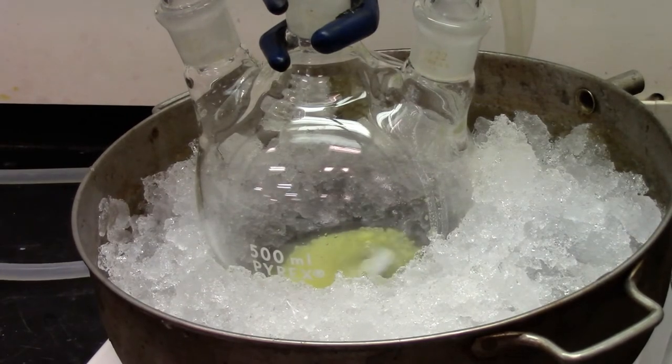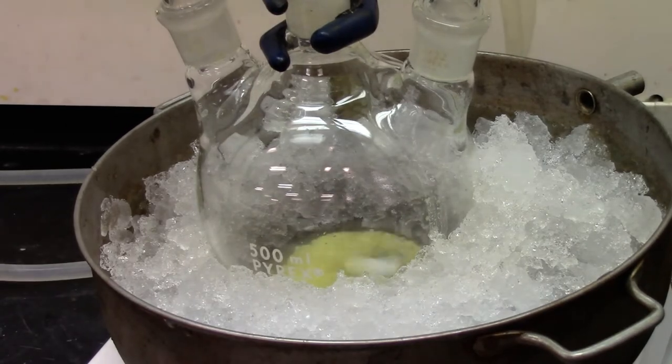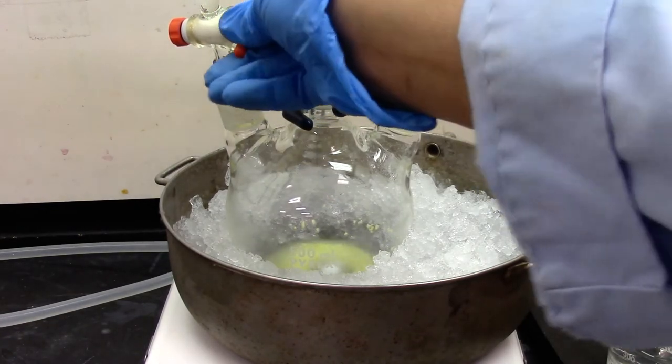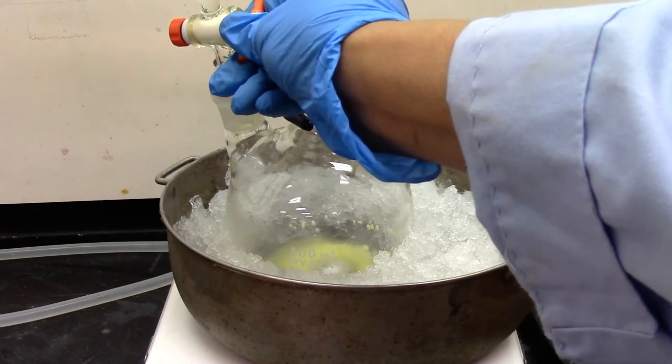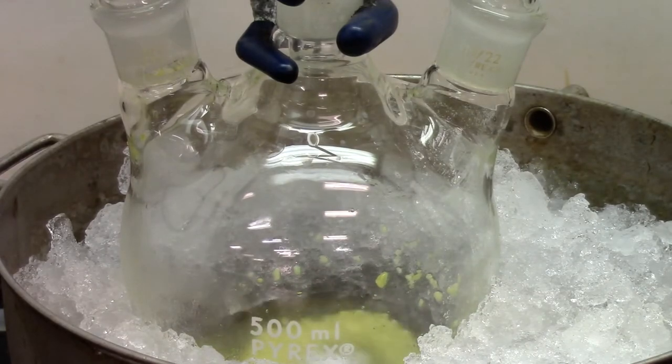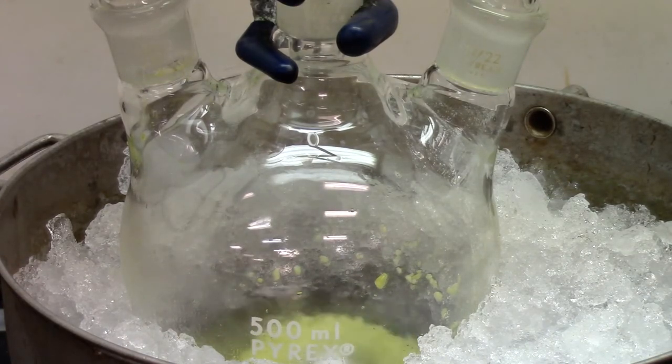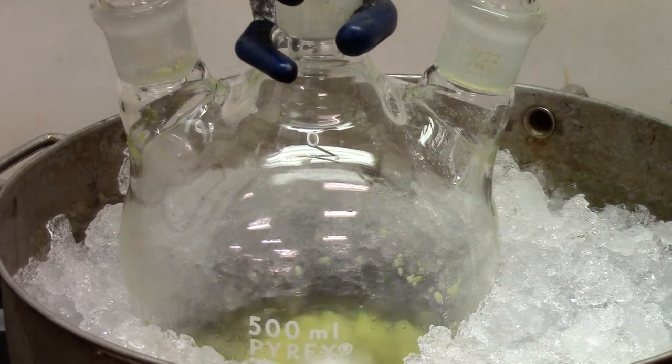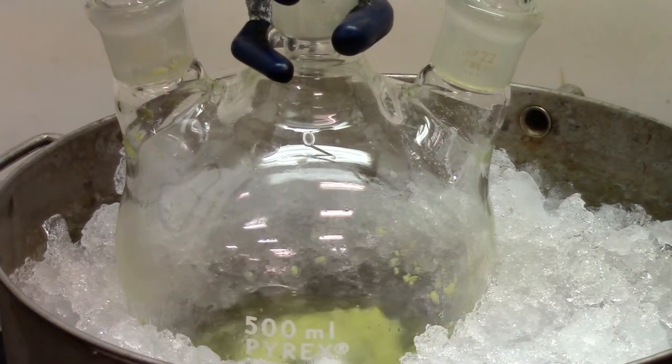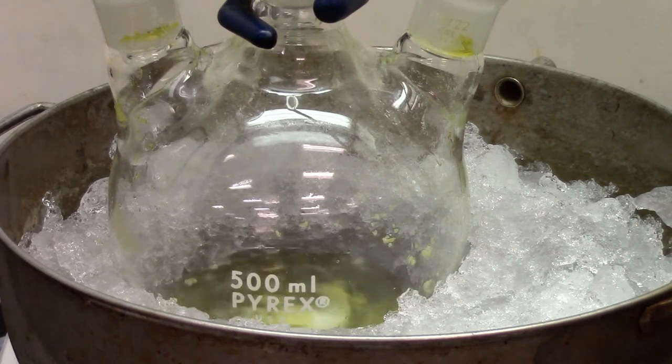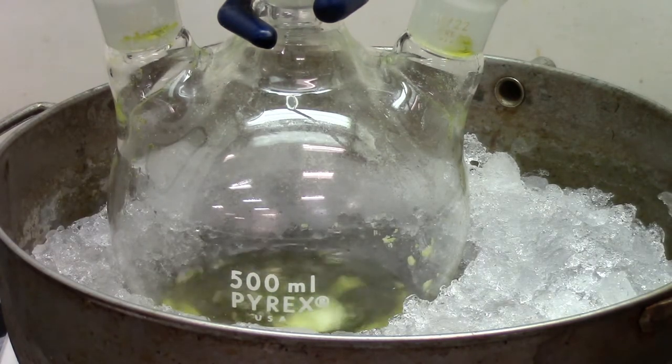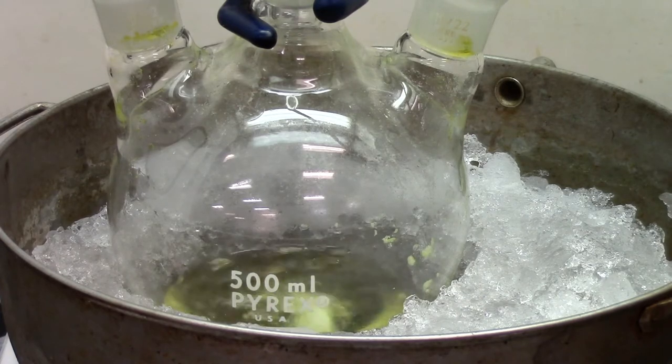And then start adding the acetyl chloride solution drop-wise through the separatory funnel. We'll go ahead and start adding the acetyl chloride mixture from the separatory funnel or the addition funnel slowly. So the addition should be drop-wise. And it should take about 15 minutes for the complete addition. The reaction is pretty exothermic. So that's the reason we need to place an ice bath to cool the reaction mixture.